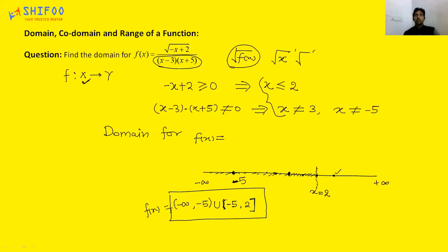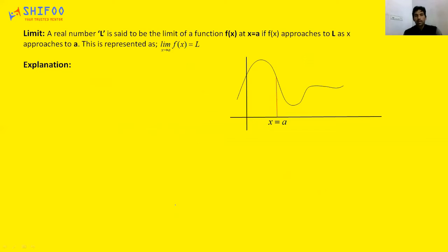This is some brief about sets, relations, and functions. Now we come to the limit of a single variable problem. The definition is: a real number L is said to be the limit of a function y = f(x) at x = a if f(x) approaches L as x approaches a. This is written as: limit as x→a of f(x) = L.